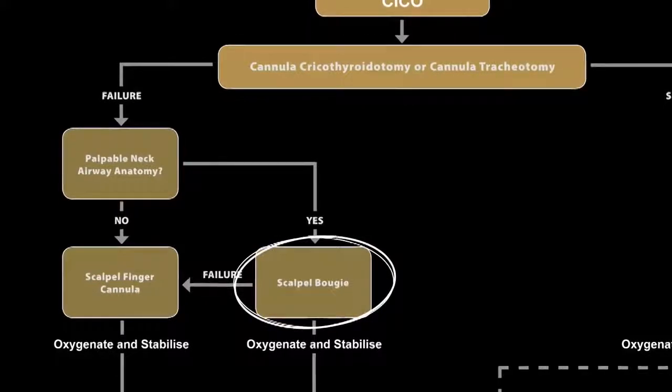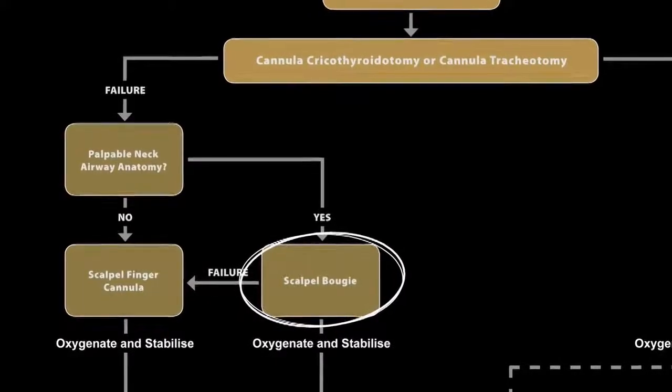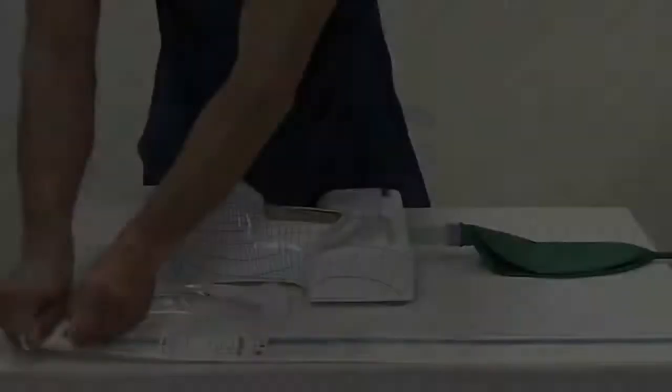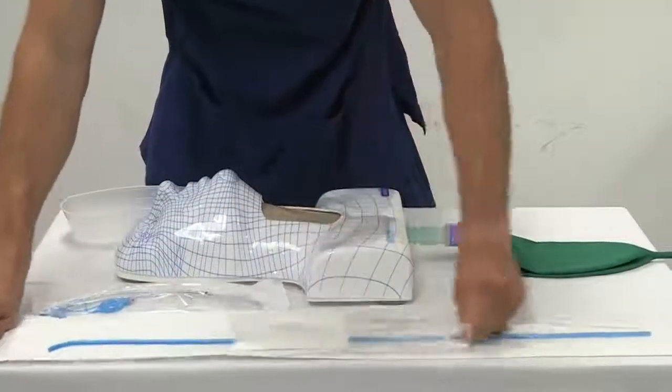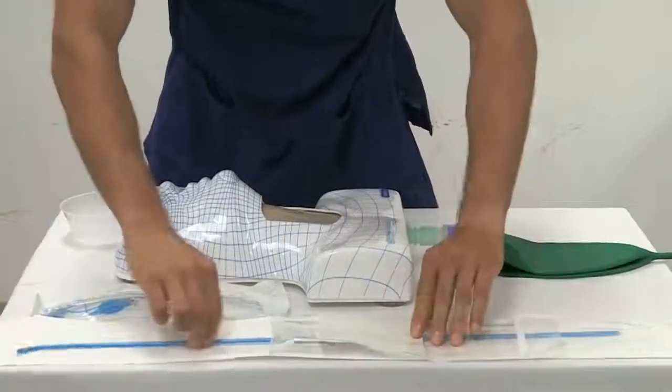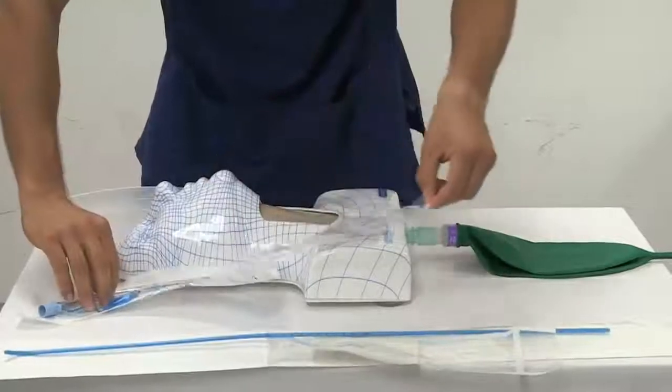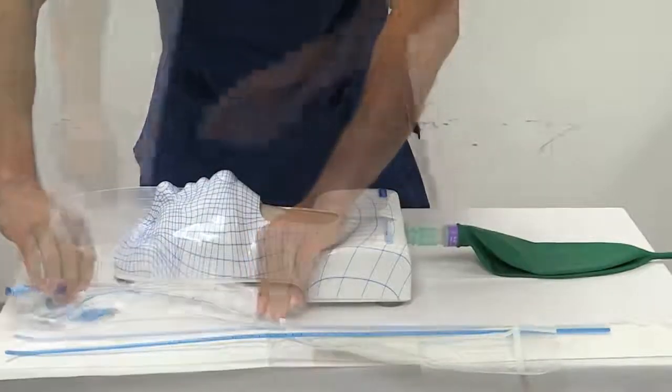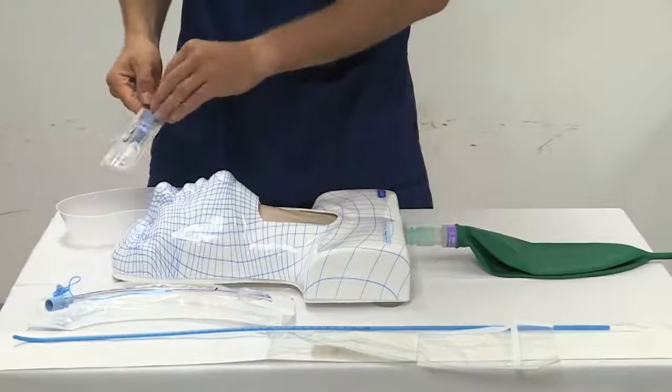If the airway anatomy is palpable, the scalpel bougie technique should be carried out. A standard Frova bougie with a 15mm RapiFit connector, a size 6 endotracheal tube and a size 10 scalpel blade are required for this technique.